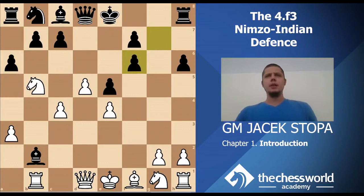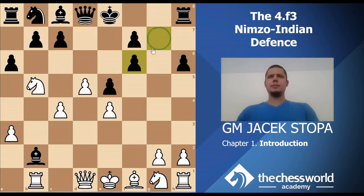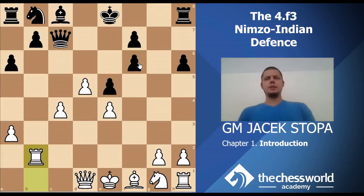White captures on f6. Now queen f6 is again impossible because of knight c7, so Black is forced to recapture with the pawn — which Black doesn't want. I kind of used a good trick there to force Black to capture with the pawn. What is the point of these exchanges for White? Well, first of all, White's structure is better — no doubled pawns.